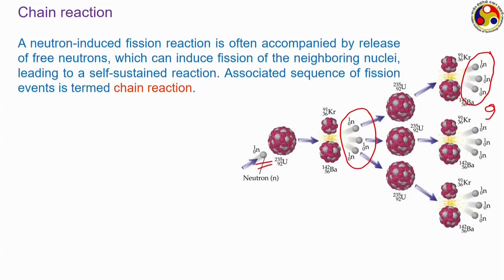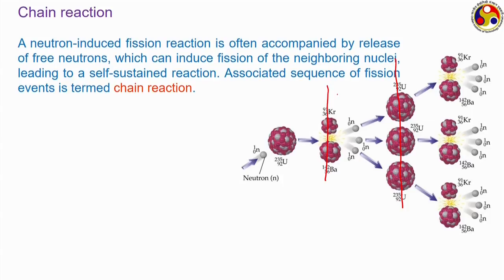However, this is a very idealized diagram, because it is not that all neutrons emitted by a fission reaction will induce fission in subsequent nuclei. Some will and some will not. It is also possible that none of them are able to induce any further fission, because after being emitted and before striking the next nucleus, the neutron can undergo several phenomena which we will discuss shortly.